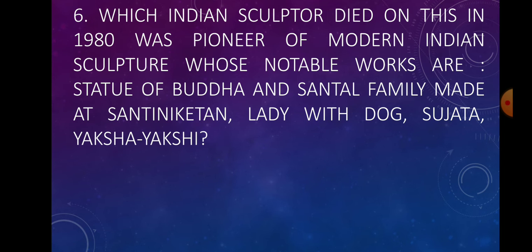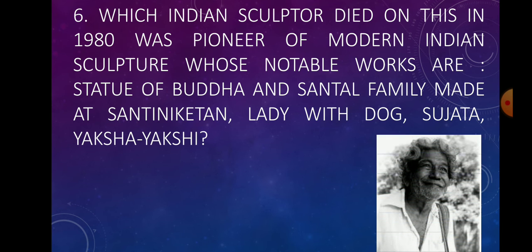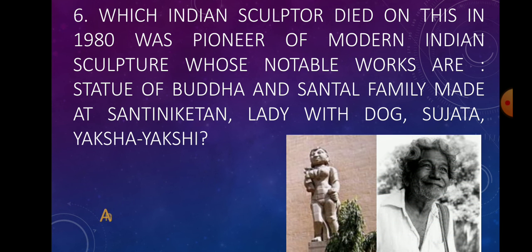Question number six: which Indian sculptor died on this day in 1970, who was a pioneer of modern Indian sculpture whose notable works are the statue of Buddha and Santal family made at Santiniketan, Lady with Dog, Sujata, and Yaksha Yakshi? Answer: Ramkinkar Baij.